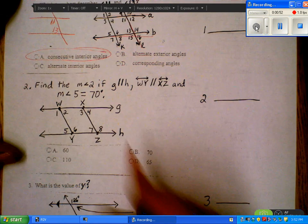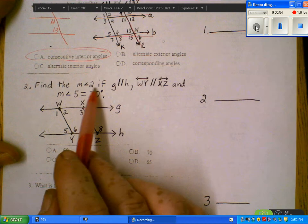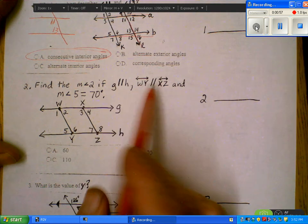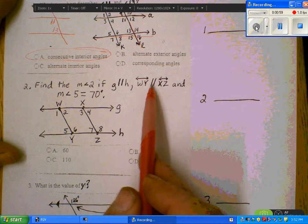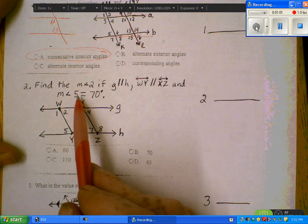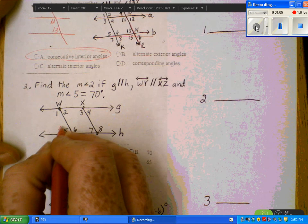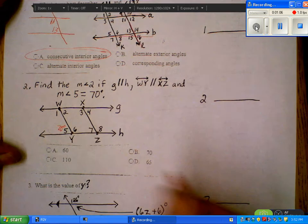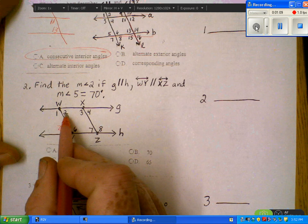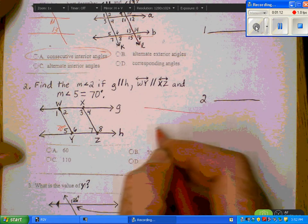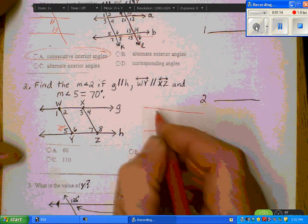Now, number 2. Find the measure angle 2 if G is parallel to H and Y is parallel to X. If the measure of angle 5 is 70, first thing I'm going to do is write 70 in there. You want to find the measure of angle 2. So again, I'm going to split off the lines that I want to see.